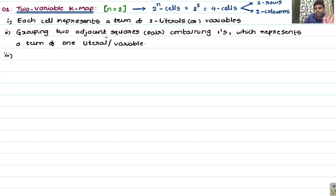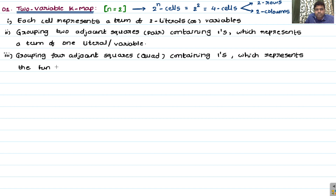The third point: grouping four adjacent squares — previously we had a pair, but here it's a quad — containing ones, which represents the function equals to one, meaning we get no remaining variable. Grouping all four adjacent squares containing ones represents the function value equal to one. These are the important points for the two-variable K-map method.